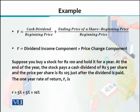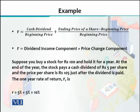When we look at the formula, the rate of return is equivalent to: the cash dividend divided by the beginning price (the initial price at which you purchased), plus the ending price of the share minus the beginning price, divided by the beginning price. The first section accounts for the dividend income component, and the second section — after the plus sign — tells you about the changes in the market price of that particular stock or share. These are the two parts of the return: dividend income component and price change component.